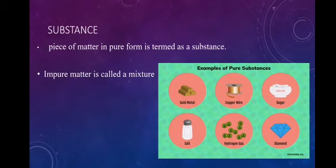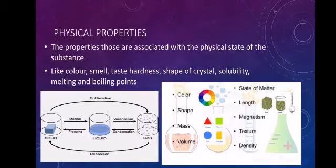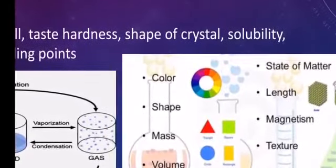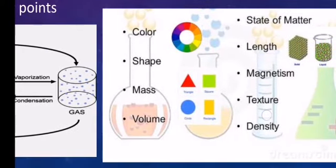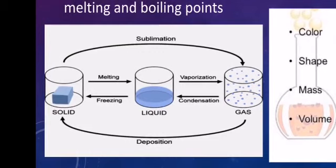Physical properties are properties associated with the physical state of a substance, like color, smell, taste, hardness, shape of the crystal, solubility, melting and boiling point. Examples include color, shape, mass, volume, length, and density. For example, when ice is heated, the solid form melts.